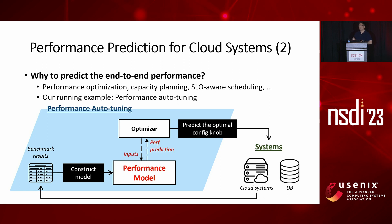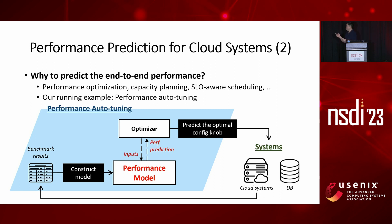The running scenario in our paper is on performance auto-tuning, which is shown in the figure. In the middle is the performance model, and we coupled it with an optimizer. The optimizer will try to find a global optimal in the modeled performance space, and that global optimal becomes the best system configuration knobs that you should use. The system can also give us feedback, which allows us to further construct or improve the performance model.